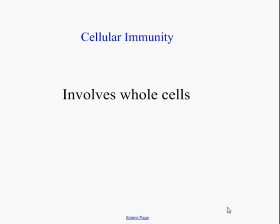Cellular immunity means that there are actually whole cells in your body involved in destroying pathogens that get in there. The best example of this would be phagocytes — sometimes called macrophages, sometimes called neutrophils. These are types of very large white blood cells, and when we talk about the lymphatic system, we'll discuss those in more detail.